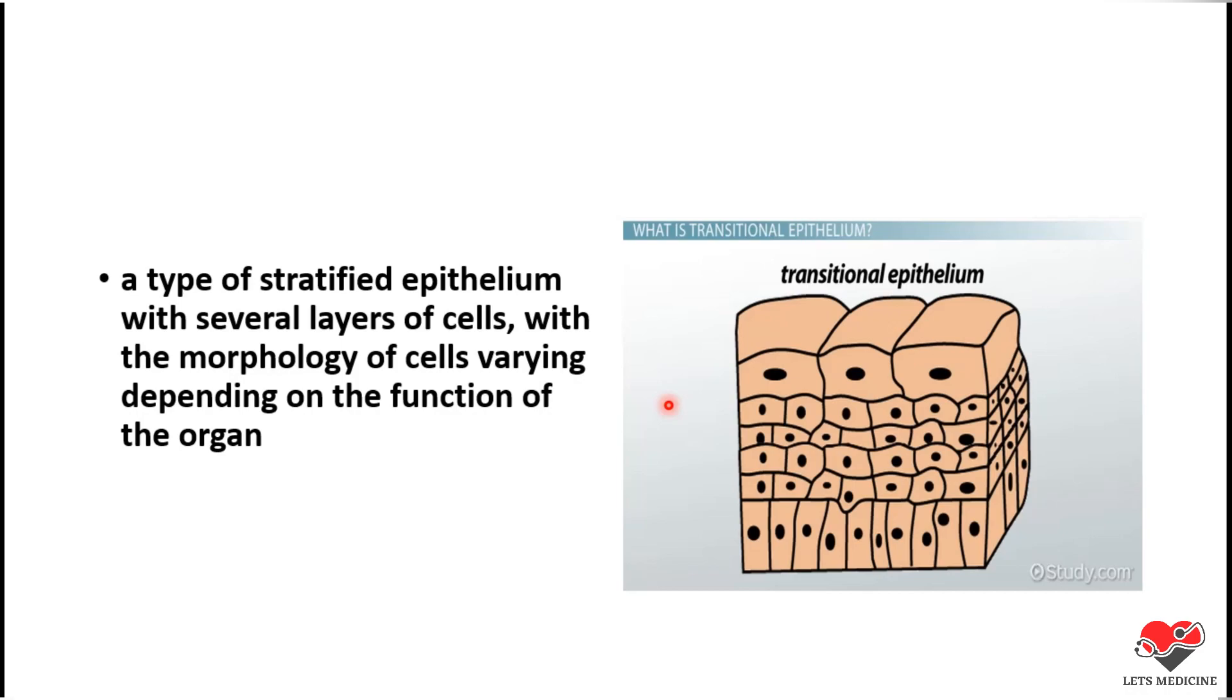The shape of the cell will vary depending upon the functional state of the organ. The shape of the cells in Transitional Epithelium can be cuboidal, columnar, or squamous, but all this depends upon the functional state of the organ.